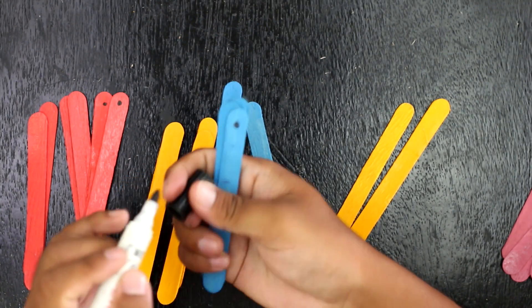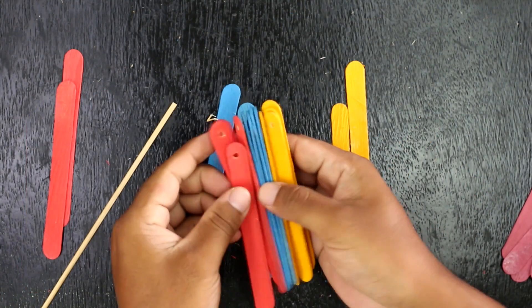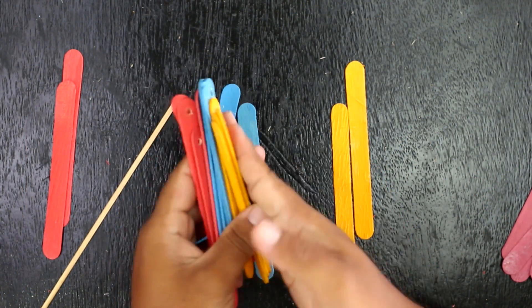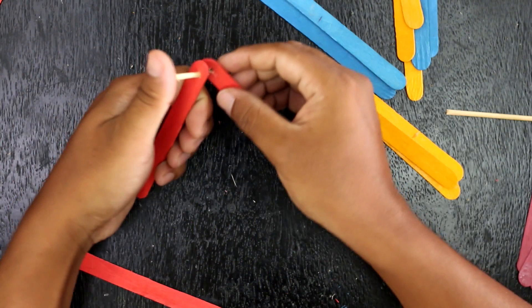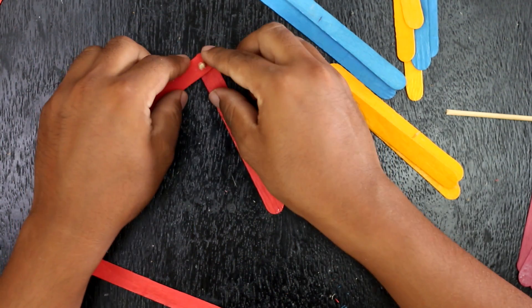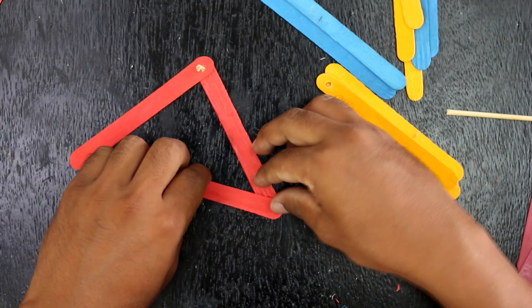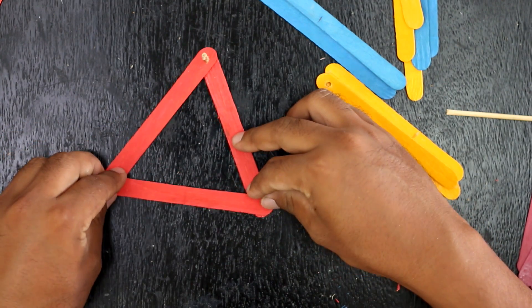First of all I am making the wheel. For this I am using 4 packs of colored popsicle sticks, each containing 6 popsicle sticks. Drill 4 popsicle sticks of each color and make a triangular shape and glue it.